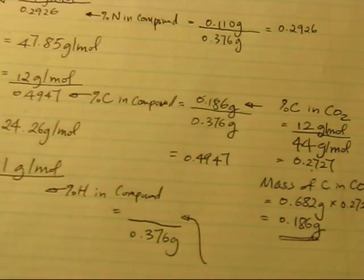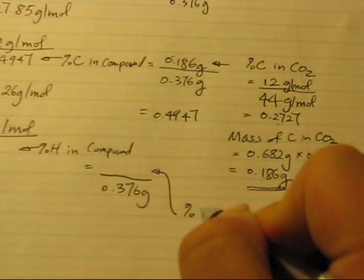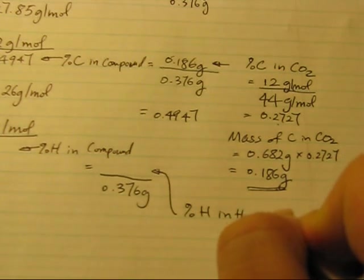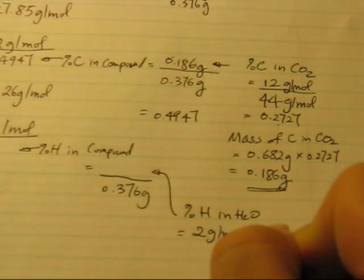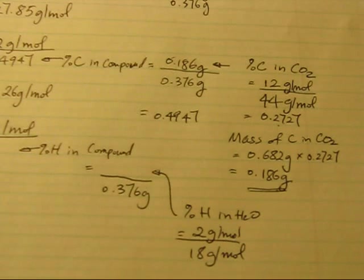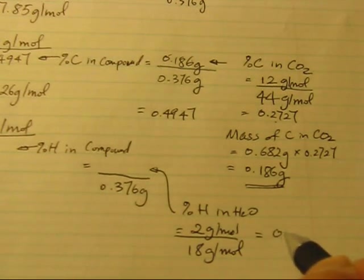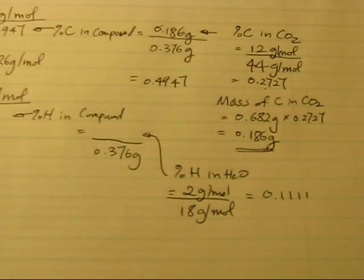So in order to get this number, what we need to do is calculate the percentage of hydrogen in water, which is 2 grams per mole over 18 grams per mole. Now that is equal to 0.1111. If you put in the calculator, it will give you that number.